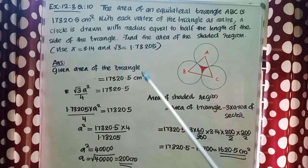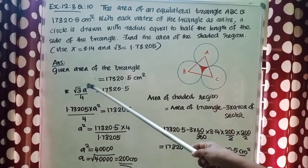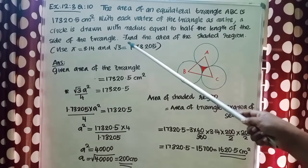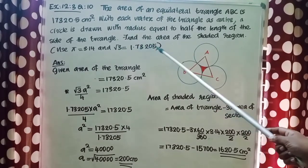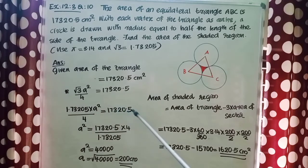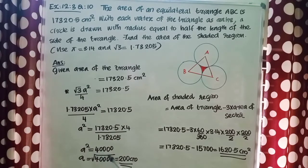Given, area of the triangle is equal to 17,320.5 cm². That is, root 3 times a squared by 4 equals 17,320.5. We can write 1.73205 into a squared by 4 equals 17,320.5. By calculation we get a squared equal to 40,000, so a equals root of 40,000, that is 200 cm.